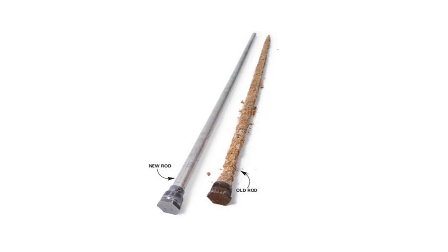Most water heaters have an anode rod immersed into the water heater through the top. The anode rod is often referred to as a sacrificial rod. Most water can contain oxygen, magnesium, fluoride, chlorine, and suspended particles. These components impart a slight conductivity to the water. Through an electrical process called electrolysis, this conductivity will eventually cause most metal to corrode. When the water is heated, this electrical process can be accelerated.